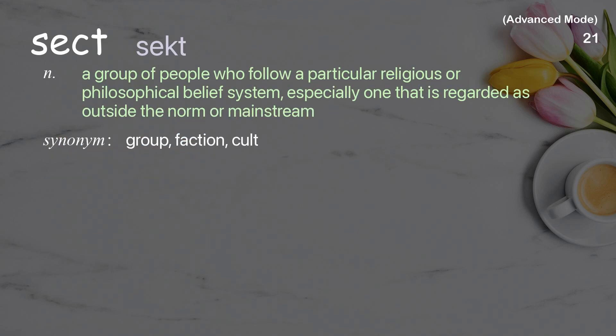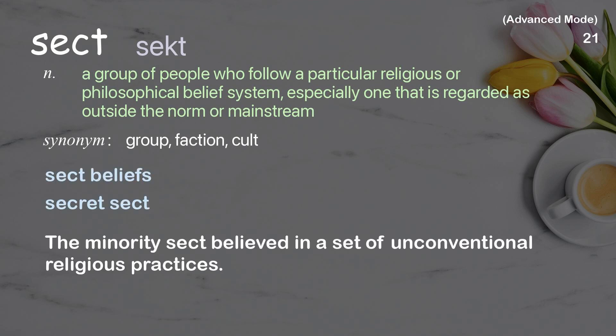Sect: A group of people who follow a particular religious or philosophical belief system, especially one that is regarded as outside the norm or mainstream. Examples: Sect beliefs. Secret sect. The minority sect believed in a set of unconventional religious practices.